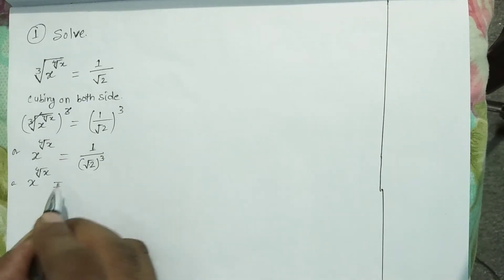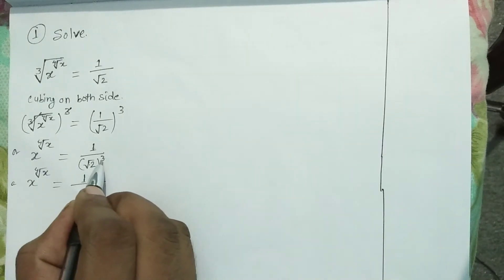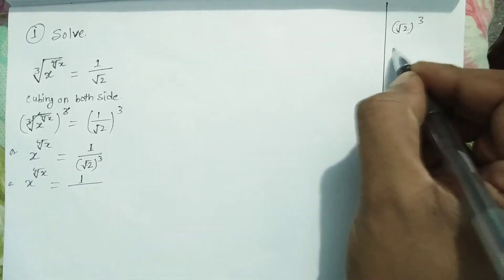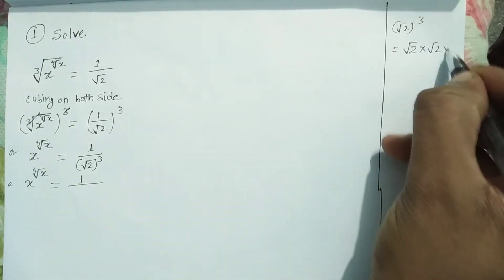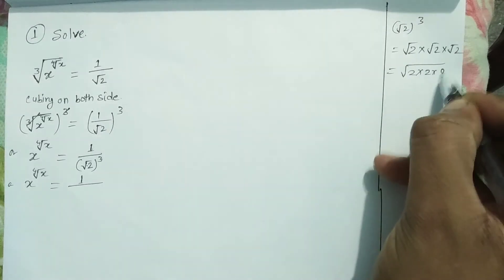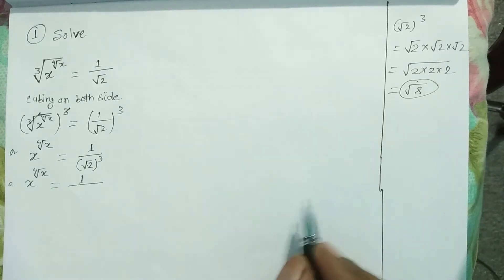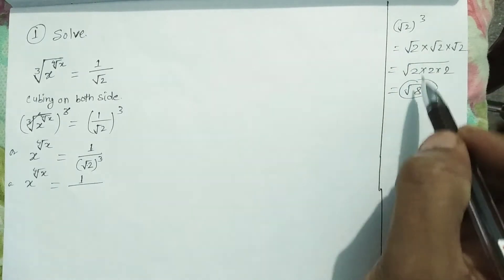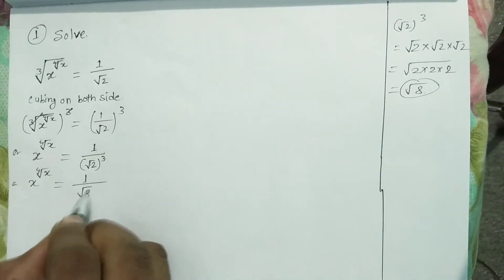Now square root of 2 whole to the power 3 means square root of 2 times square root of 2 times square root of 2. This gives square root of 2 times 2 times 2, which is square root of 8. So square root of 2 cubed is square root of 8, and we have x raised to power fourth root of x is equal to 1 by square root of 8.